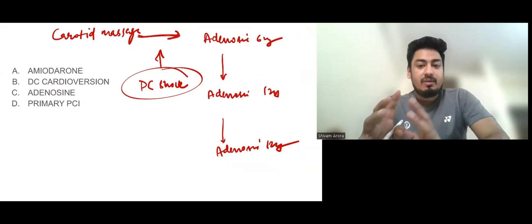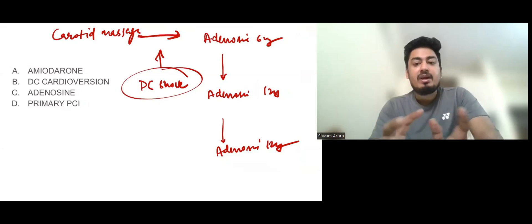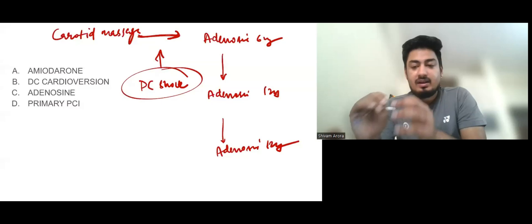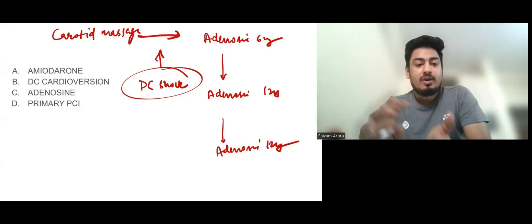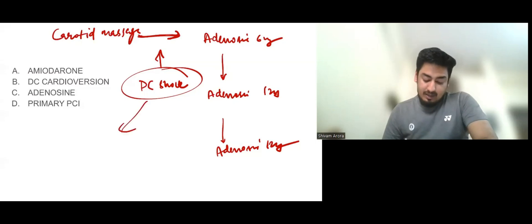You should remember that if any arrhythmia patient is in shock, then the treatment is DC shock. Like AF patient in shock: DC shock. PSVT patient in shock: DC shock. Monomorphic VT patient in shock: DC shock. So for any arrhythmia, if patient is in shock, treatment is DC shock. DC shock can be of two types: cardioversion and defibrillation.